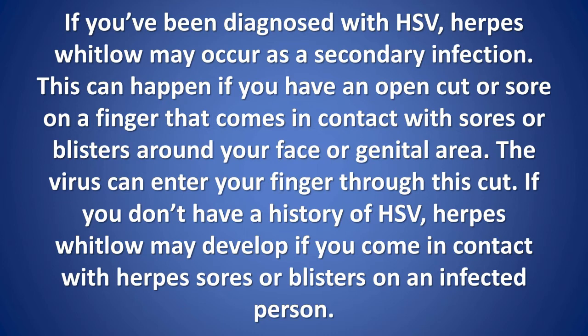A secondary infection can happen if you have an open cut or sore on a finger that comes in contact with sores or blisters around your face or genital area — the virus can enter your finger through this cut. If you don't have a history of HSV, herpes whitlow may develop if you come in contact with herpes sores or blisters on an infected person.